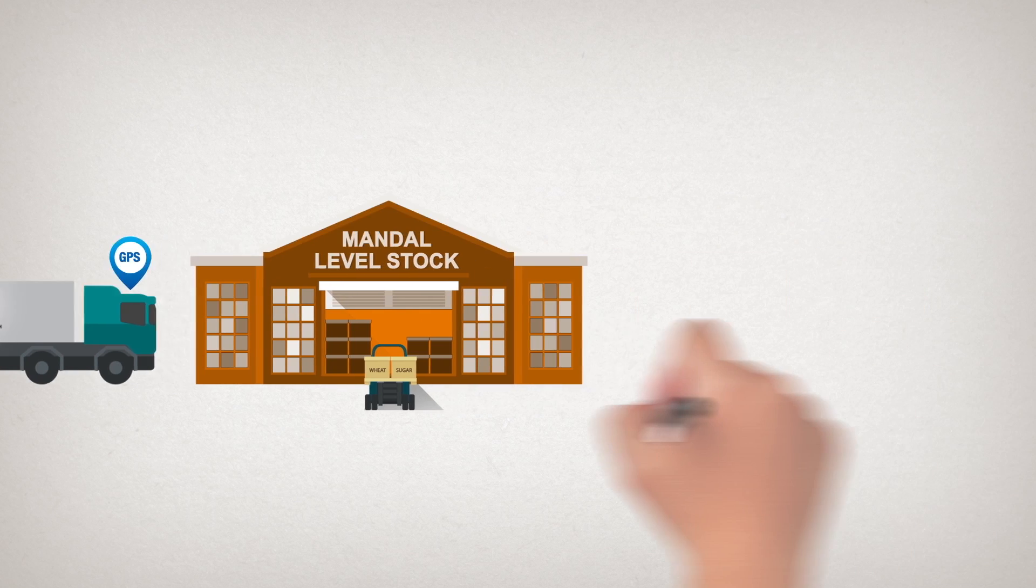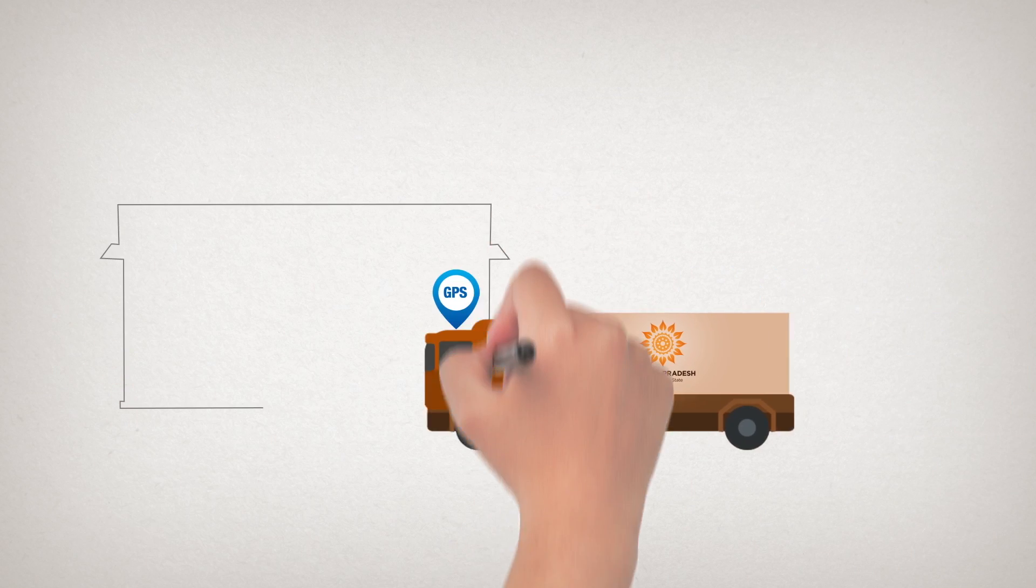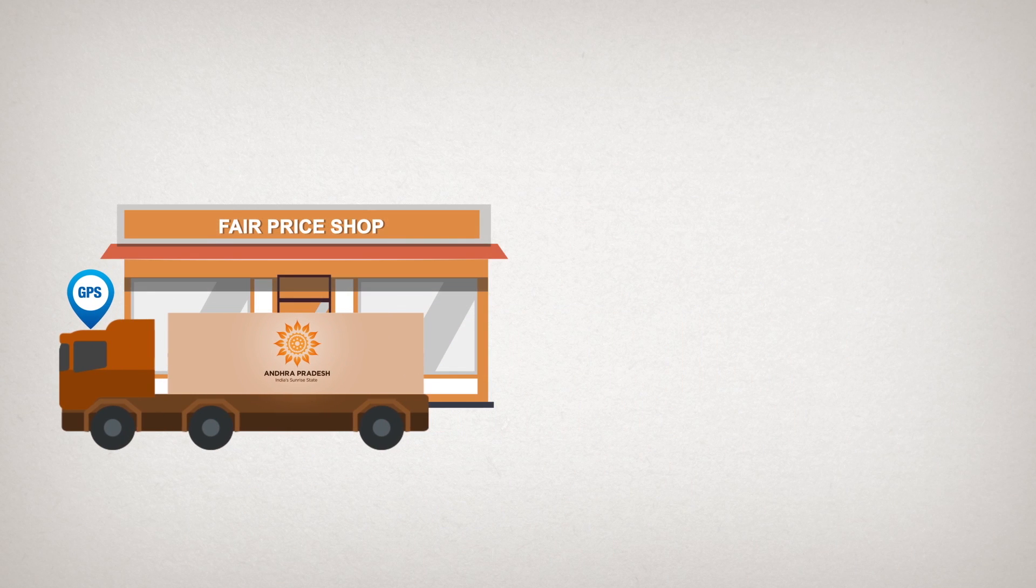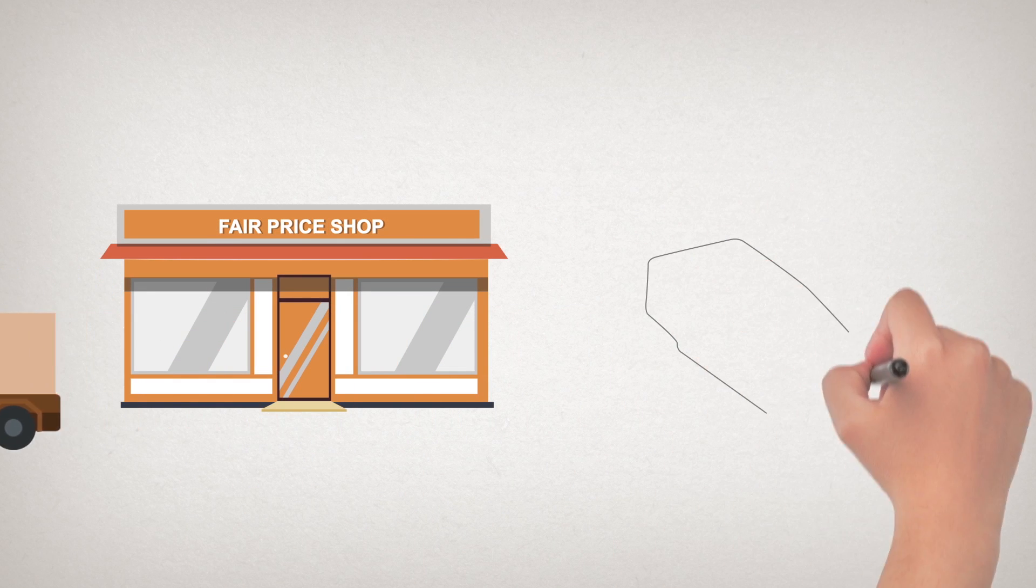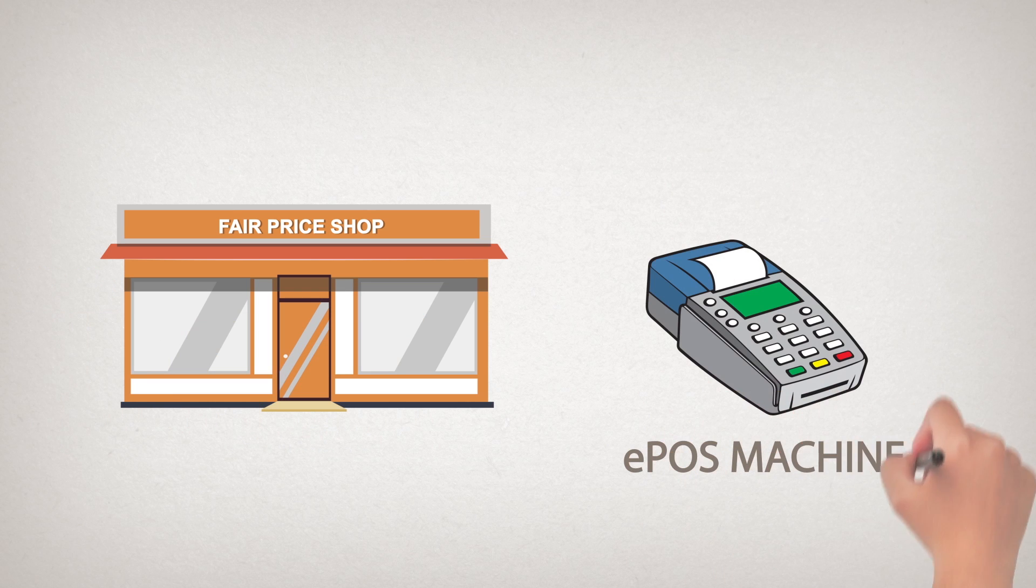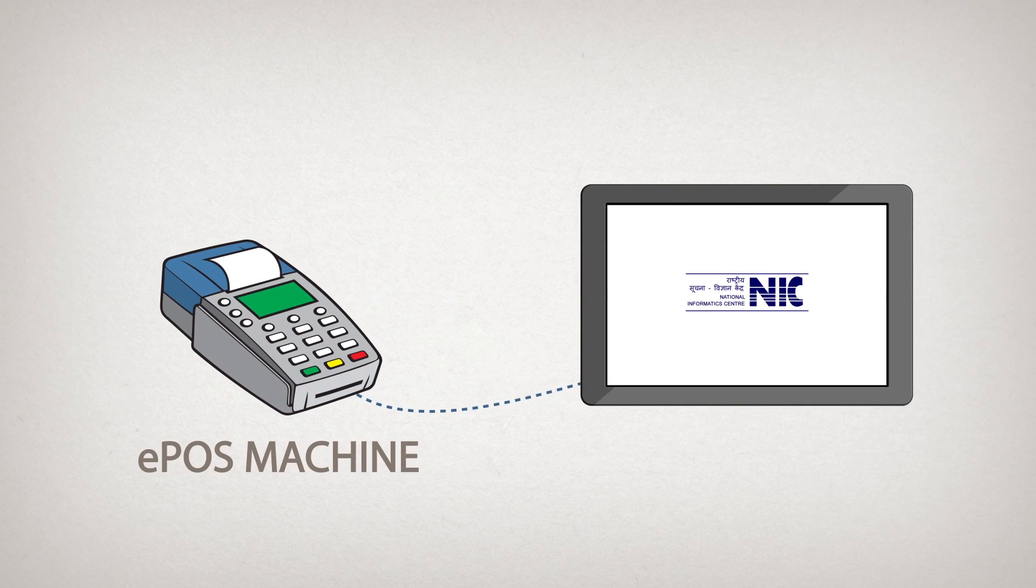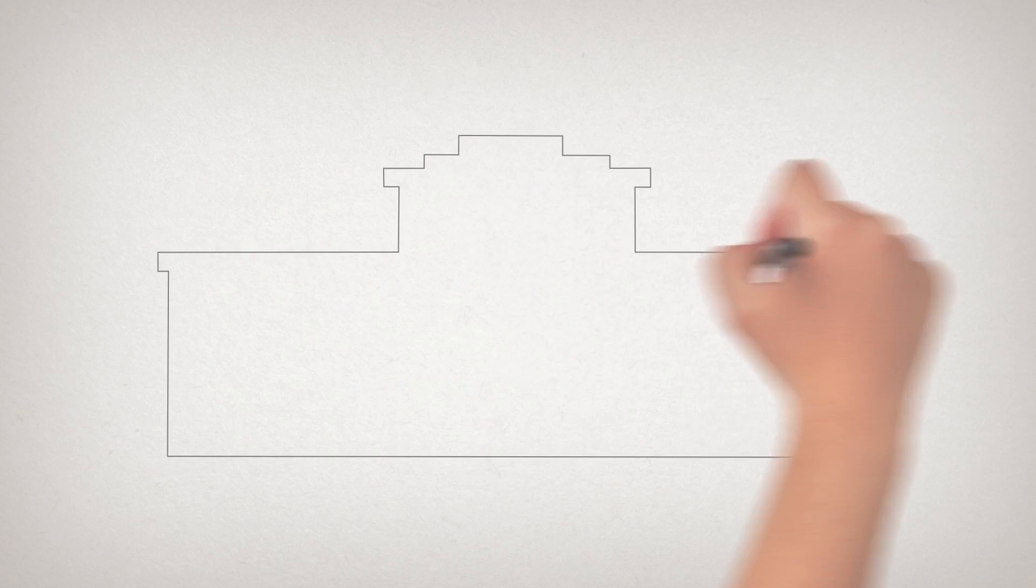The commodities are again transported on GPS-enabled vehicles to fair-price shops. Each fair-price shop houses an EPOS machine, which is connected with the National Informatic Centre.